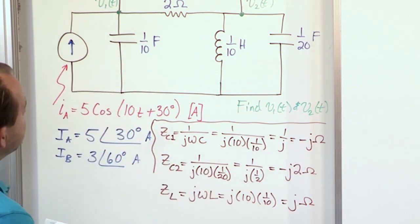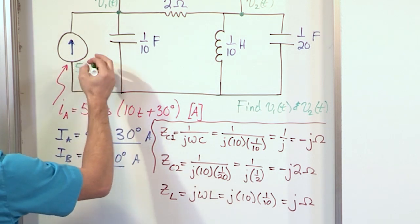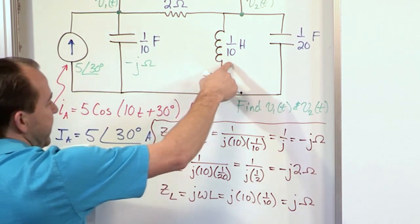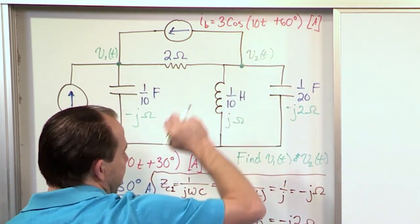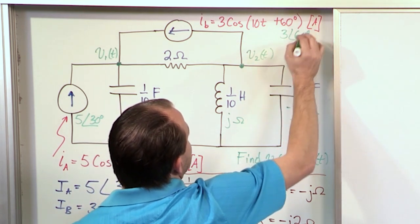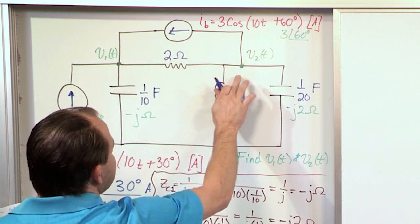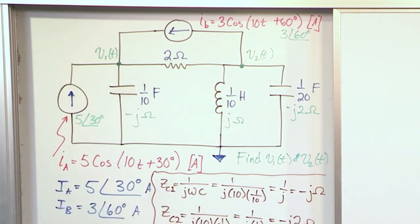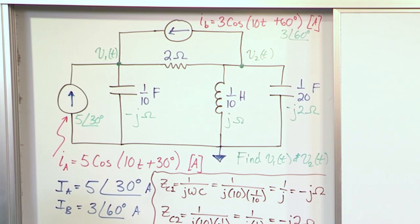We can now write these values on the circuit diagram in green: the phasor source Ia is 5∠30°, the impedance of C1 is −j ohms, the inductor is +j ohms, C2 is −j2 ohms, and Ib is 3∠60°. For the reference node, as in most of these problems, we'll use the bottom of the circuit. Now let's write a node voltage equation at position V1.